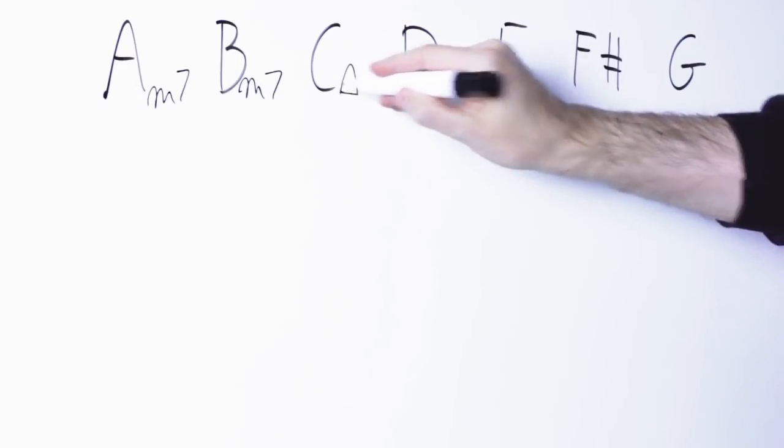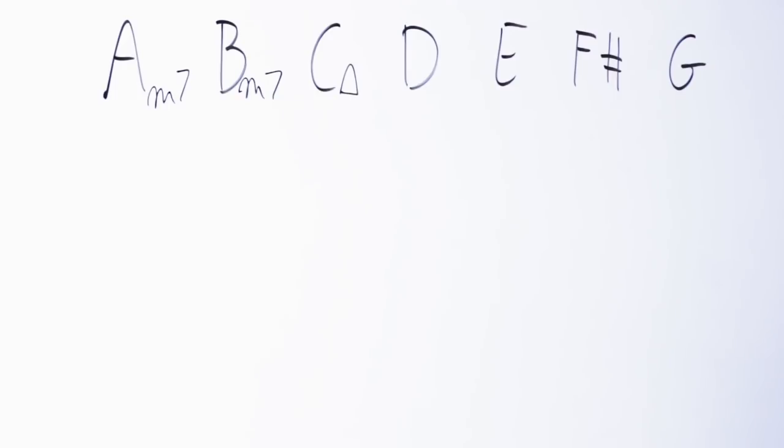On the fourth note I can build a D major D F sharp A C. On the fifth note I can build an E minor E G B, or an E minor 7th chord E G B D. On the sixth note I can build an F sharp diminished triad F sharp A C, or an F sharp minor 7th flat 5 F sharp A C E. On the seventh note I can build a G major G B D, or a G major 7 G B D F sharp.